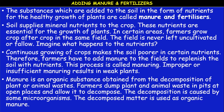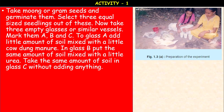Continuous growing of crops makes the soil poorer in certain nutrients. Therefore, farmers add manure to the fields to replenish the soil — this process is called manuring. Improper or insufficient manuring results in weak plants. Manure is an organic substance obtained from the decomposition of plant and animal waste. Farmers dump plant and animal waste in pits and allow it to decompose. The decomposition is caused by soil microbes, and the decomposed matter is used as organic manure.